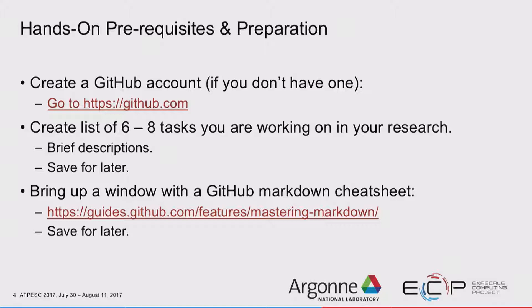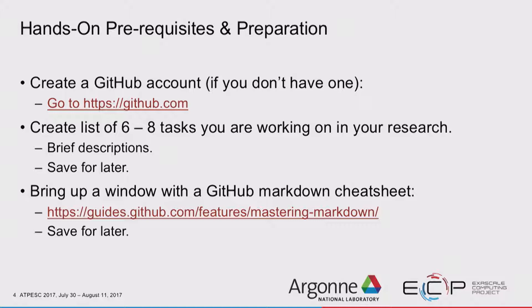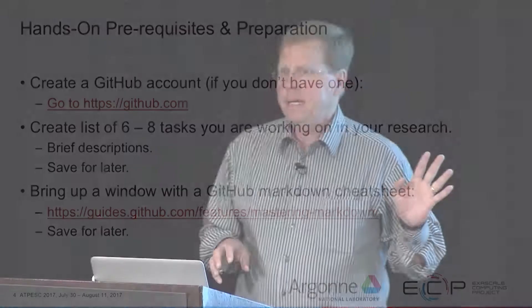Some prerequisites: most of you have a GitHub account. If you don't and don't want one, that's fine — maybe look over someone's shoulder during the hands-on part. Between now and when we start, think of six to eight tasks you want to enter into a repository — just scribble them down or start a little email to yourself. Also, bring up a GitHub markdown cheat sheet; just type that into a search engine and put that window aside for later.